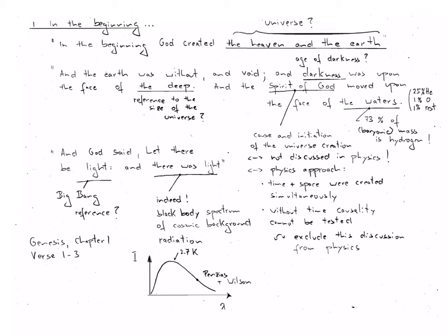Let us look at this first passage of Genesis in a little bit more detail. I quote, In the beginning God created the heaven and the earth. Well, that's clearly a reference to what we now call the universe. Then it says, quote, And the earth was without form and void. And darkness was upon the face of the deep.